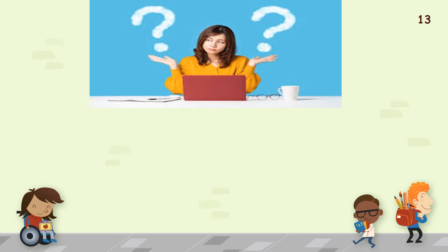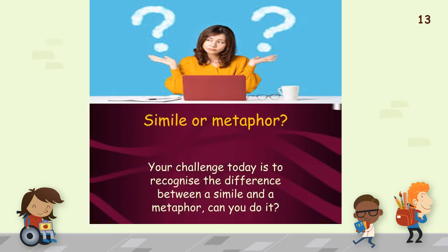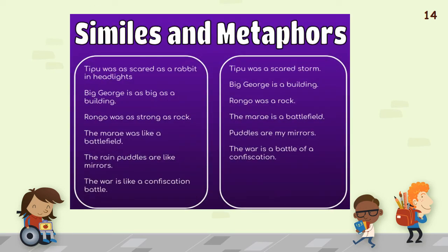Now you can hold two things in your mind: a simile and a metaphor. Your challenge is to recognize the difference between them. Let's compare. 'Tipu was as scared as a rabbit in headlights' — simile. 'Tipu was a scared storm' — metaphor; notice there is no 'like' or 'as.' 'Big George is as big as a building' — simile. 'Big George is a building' — metaphor. 'Rongo was as strong as a rock' — simile. 'Rongo was a rock' — metaphor. 'The mare was like a battlefield' — simile. 'The mare is a battlefield' — metaphor. 'The rain puddles are like mirrors' — simile. 'Puddles are my mirrors' — metaphor. 'The war is like a confiscation battle' — simile. 'The war is a battle of confiscation' — metaphor.